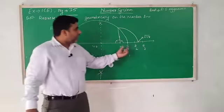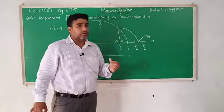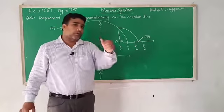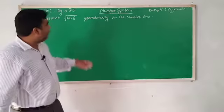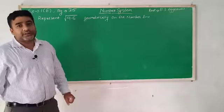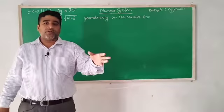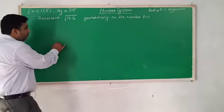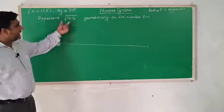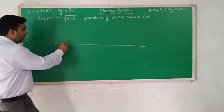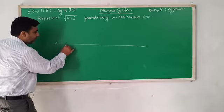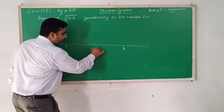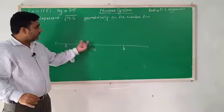Now let's represent root 9.6 geometrically on the number line. The procedure is the same. First draw a line, then using your scale, make AB = 9.6 cm. Place scale at 0, mark A, then mark B at 9.6 cm.